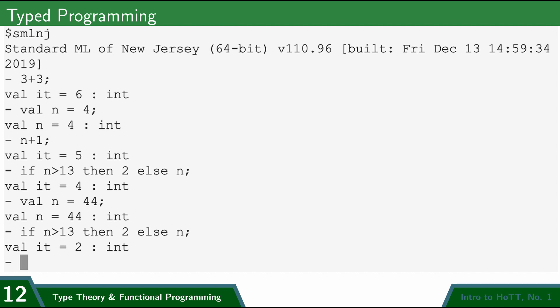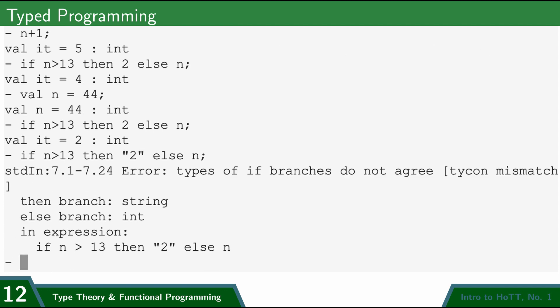Now let's type in our bug. If n is greater than 13, then quotation marks 2 else n. And so this is what a type error looks like. So notice that it complains. It says the types of if branches do not agree. So what that error message means is that this branch, the quotation marks 2, is a string, and the n is an int, which is our number type, and so they're different types, and so it doesn't like that.